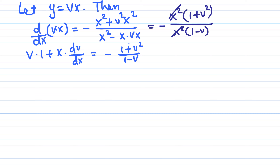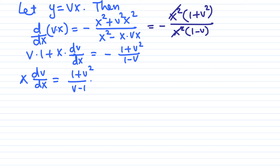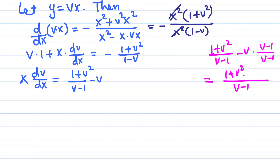Now we need to separate the variables. We subtract v from both sides, giving x dv over dx equals negative one plus v squared over v minus one, minus v. Combining these two terms over the common denominator v minus one: one plus v squared minus v times quantity v minus one gives one plus v squared minus v squared plus v, which simplifies to one plus v over v minus one.